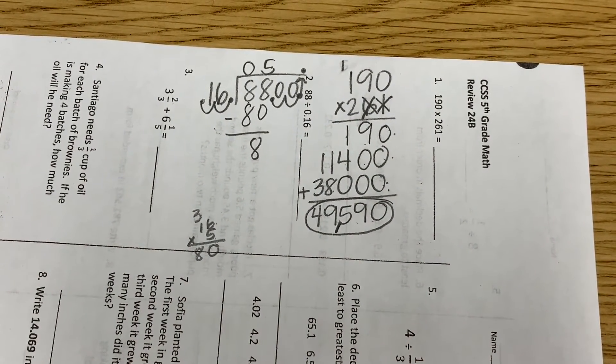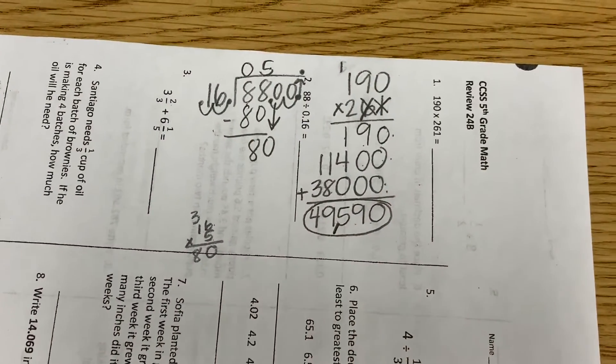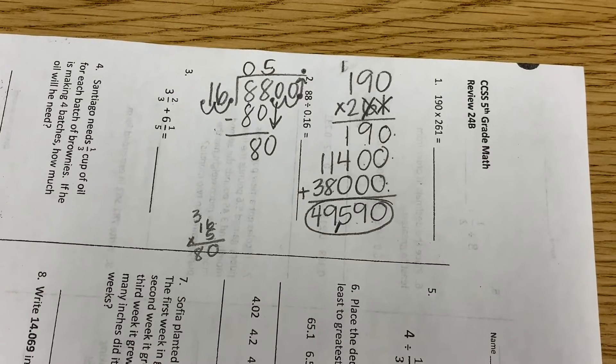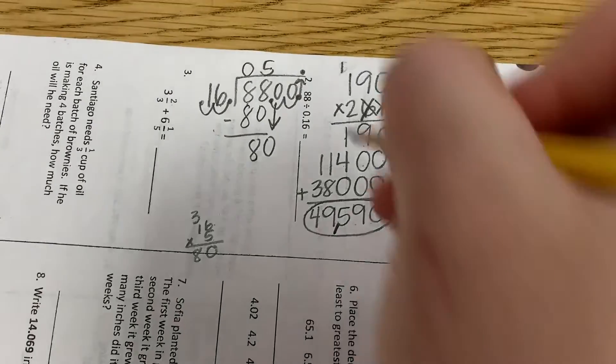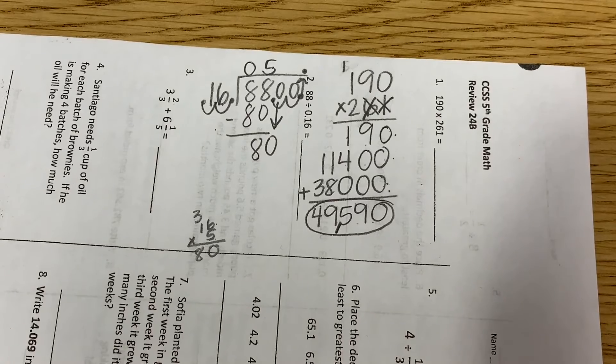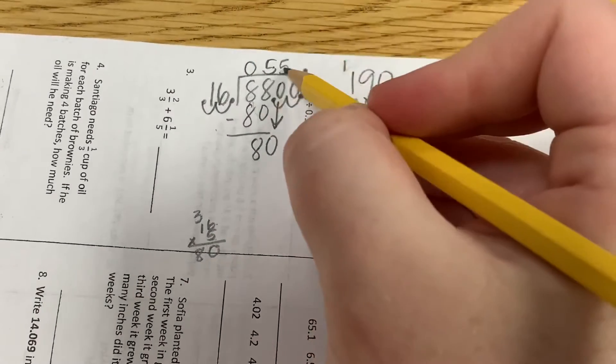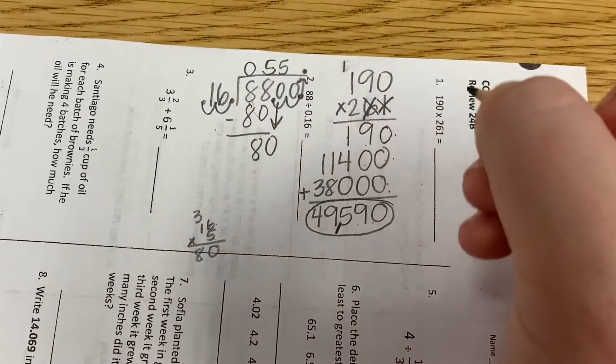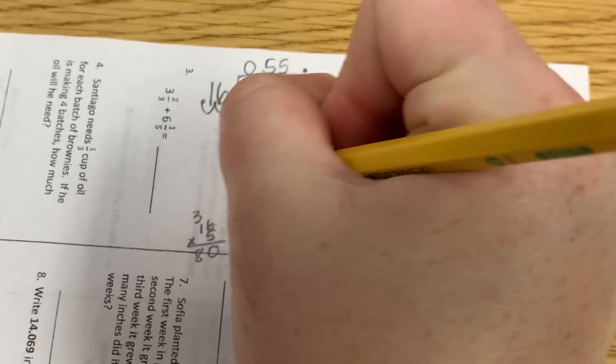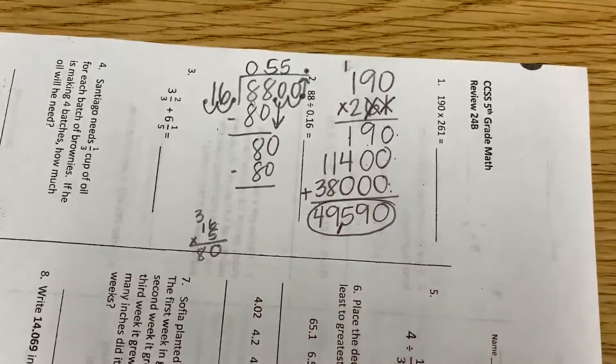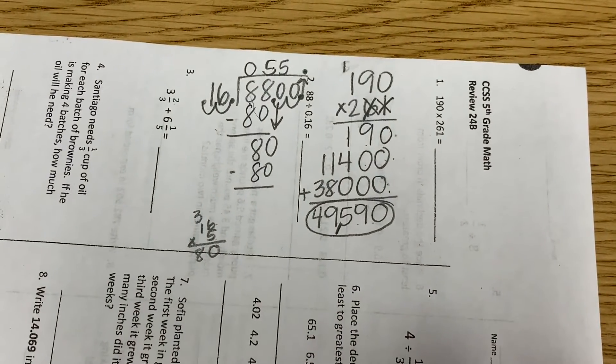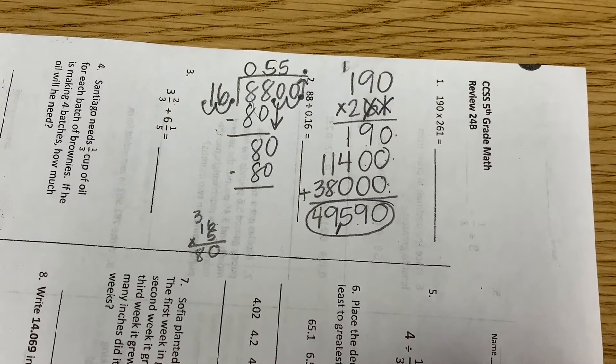What do I need to do next? Bring down my zero. Very good. How many times did we just say 16 went into 80? Five times. So I'm going to write my 5 where? Above the zero. Okay. So 5 times 16 is 80. And I subtract. 80 minus 80 is zero.